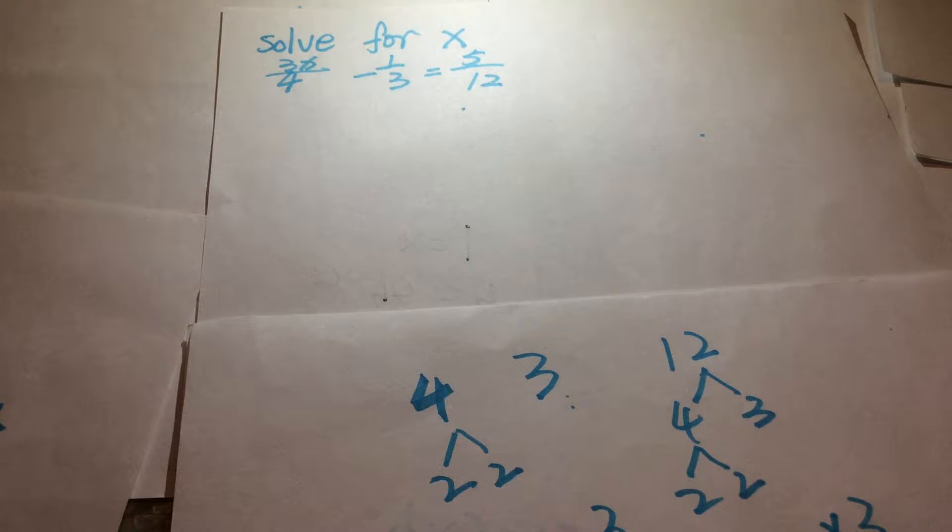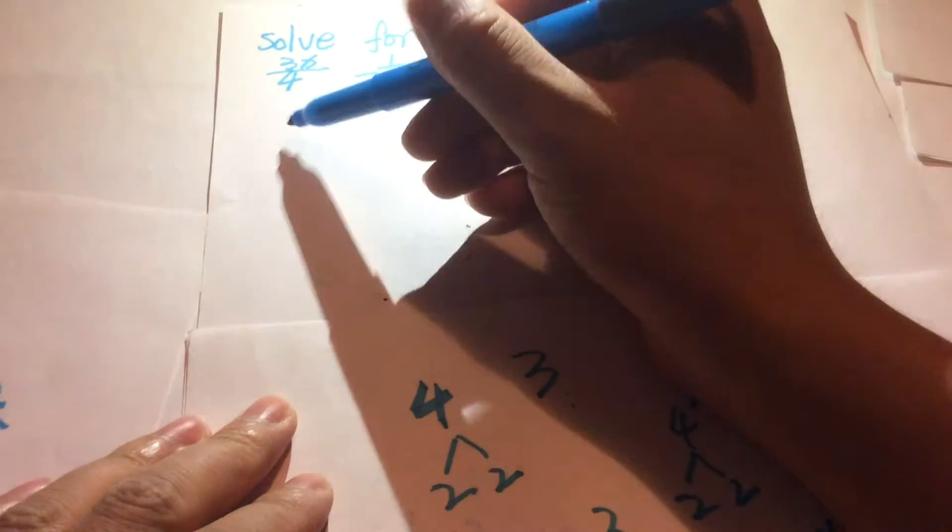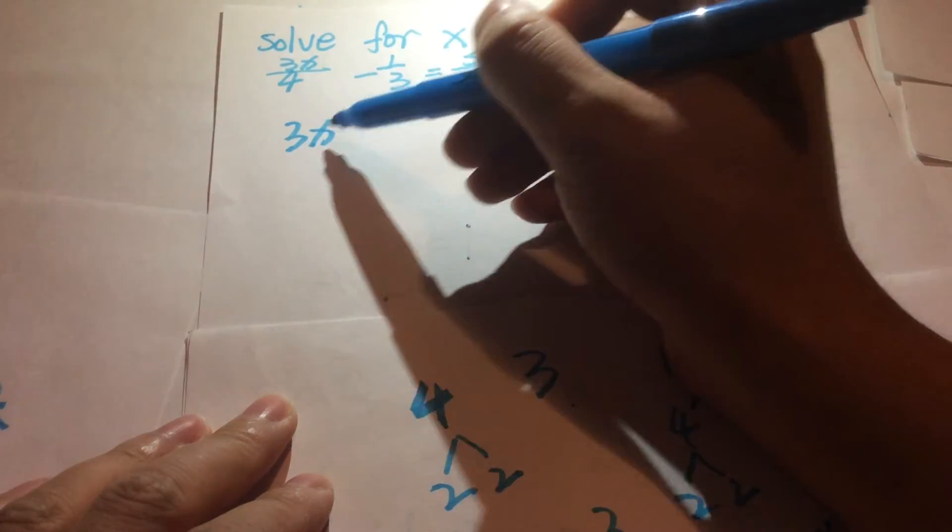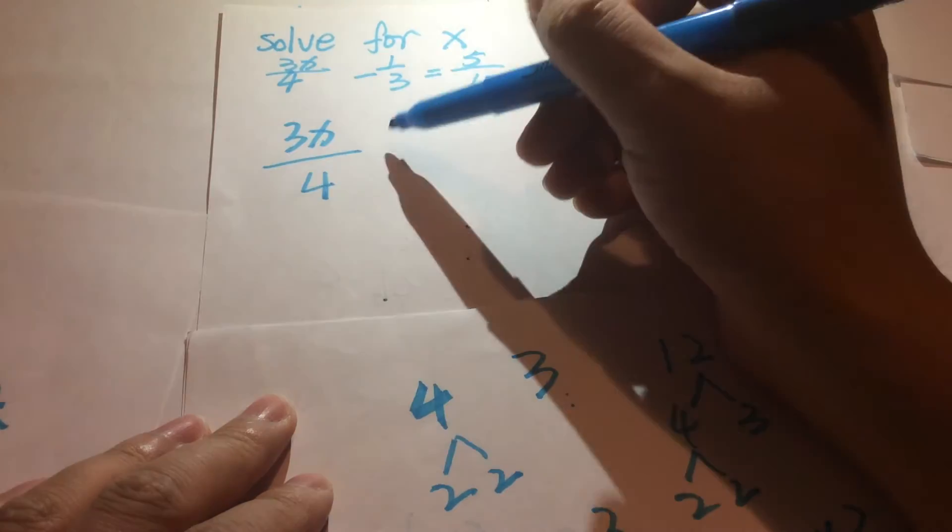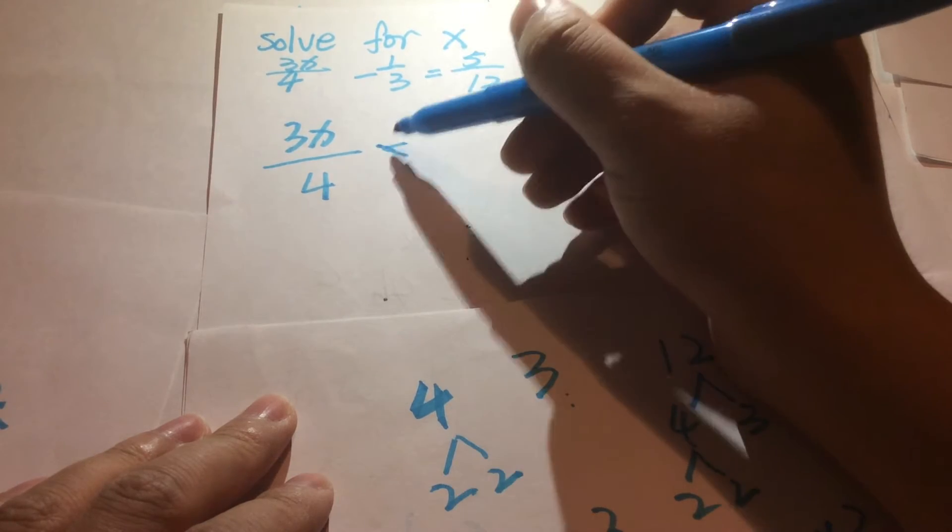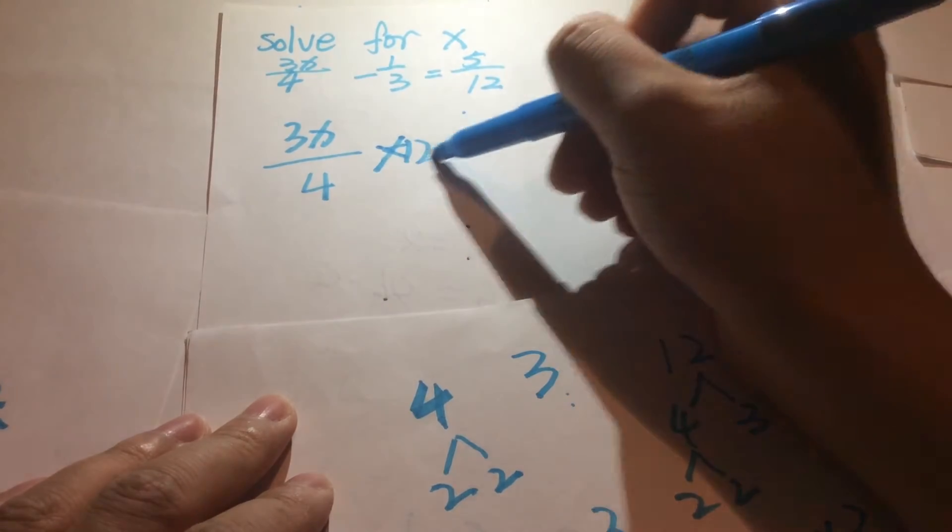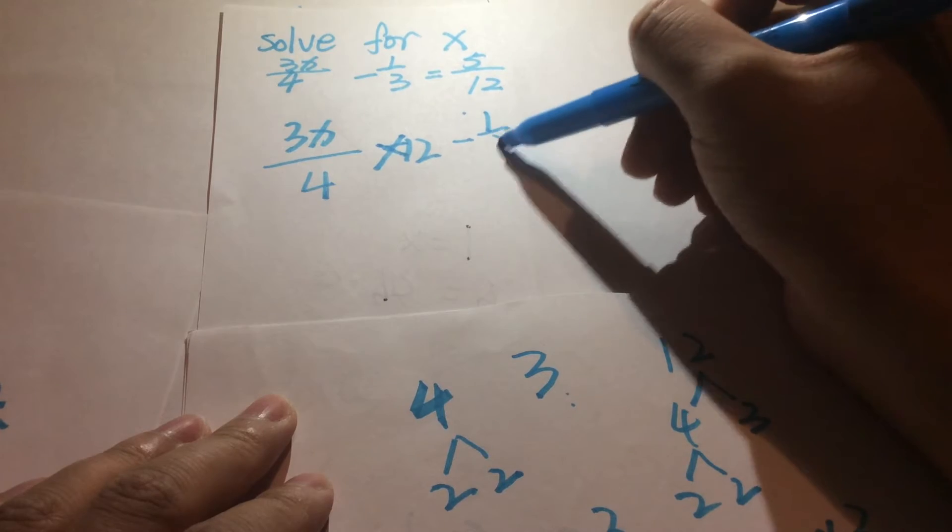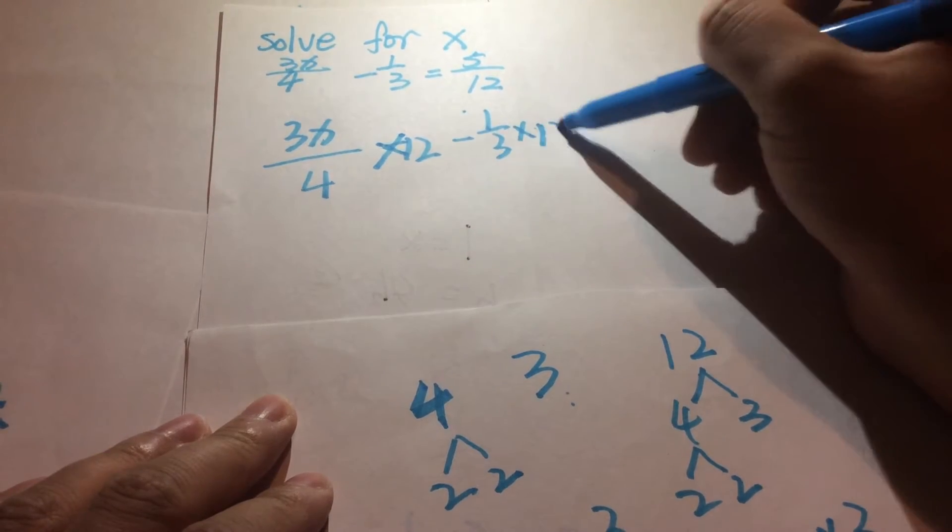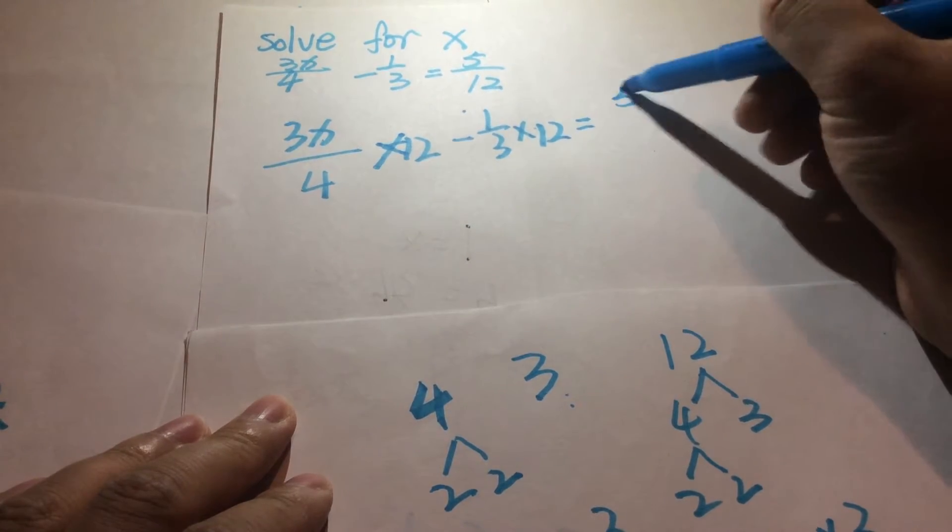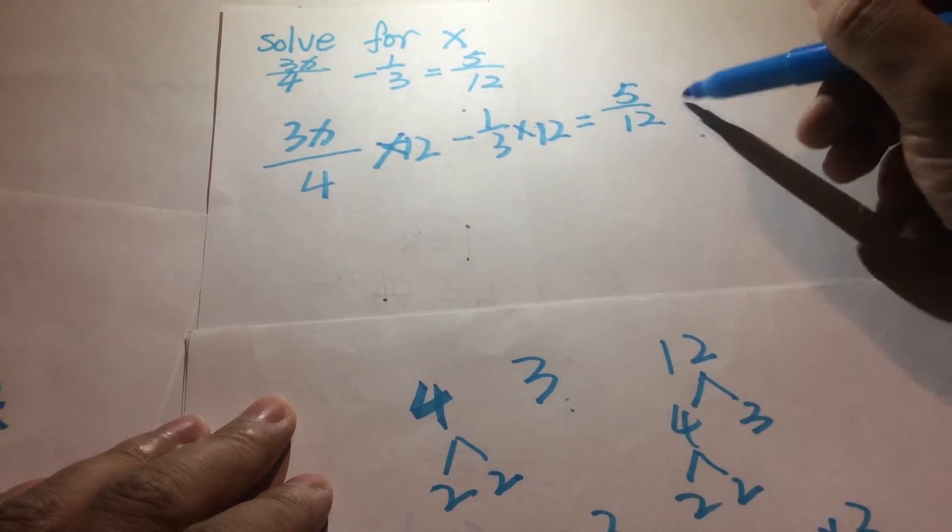We multiply both sides by 12. So 3x over 4 multiplied by 12 minus 1 over 3 multiplied by 12 equals 5 over 12 multiplied by 12.